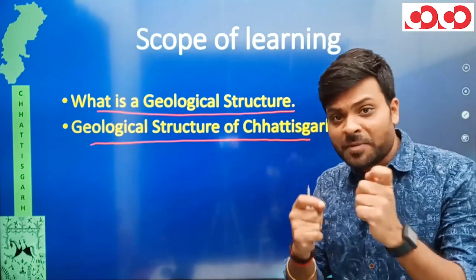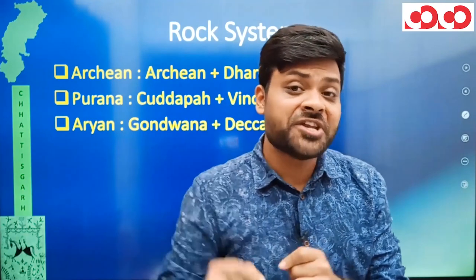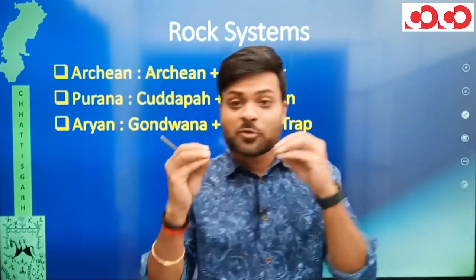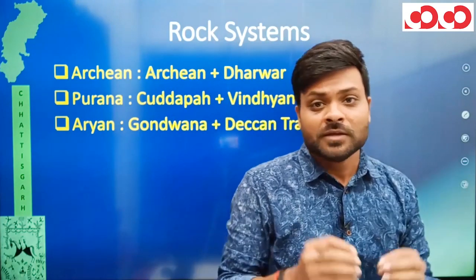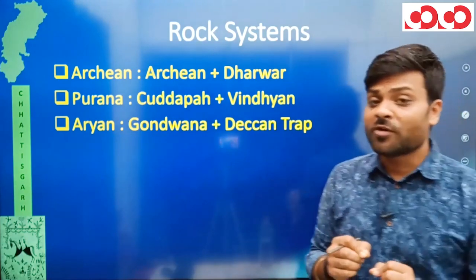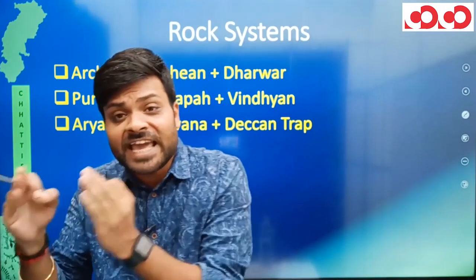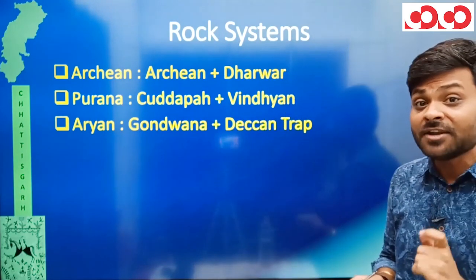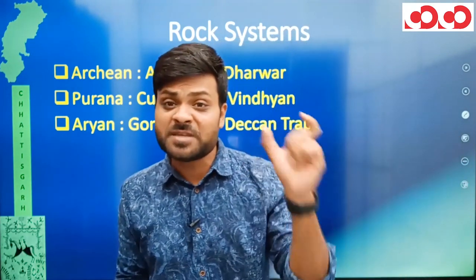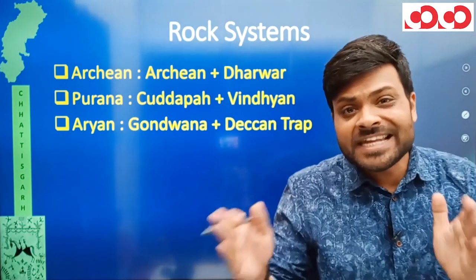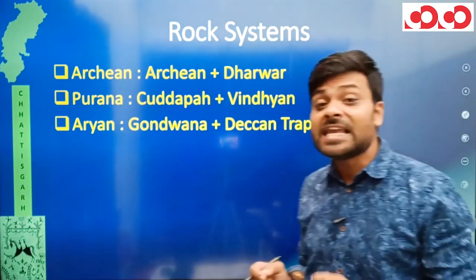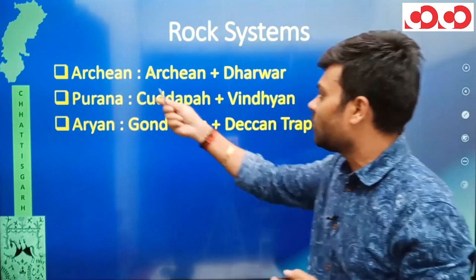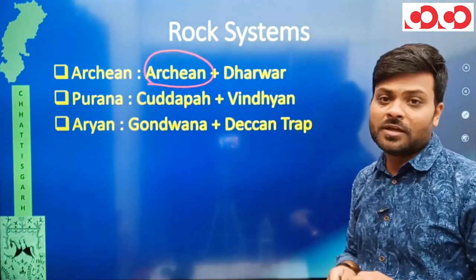First of all we have to understand what is the process of formation of rocks. Earth in the beginning — when rock formation first occurred — it was through lava cooling. This rock formed from lava cooling is called Archean rock, and this primary rock is of the igneous type. Igneous means the rock formed from the cooling of lava is called igneous rock.